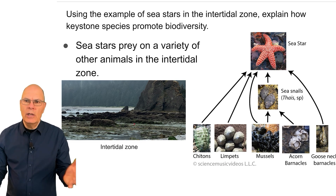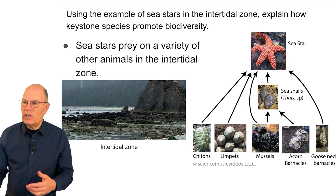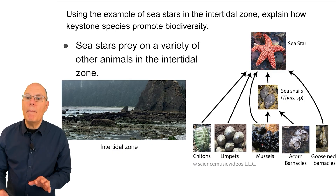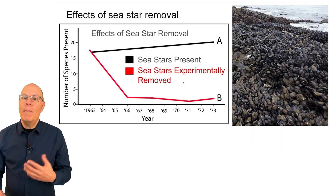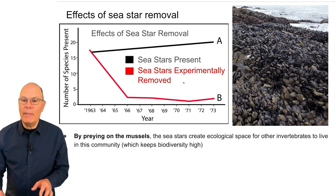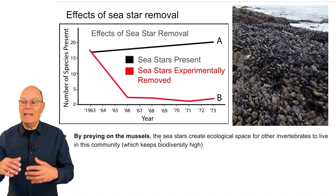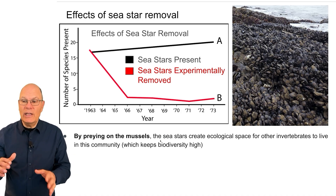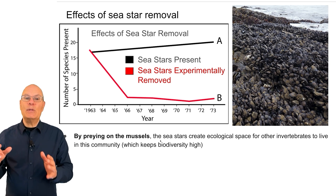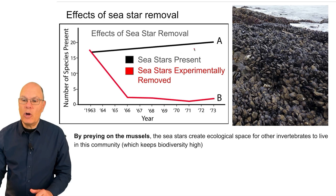Here's the intertidal zone — the zone between the low tide and the high tide — and here are some of the many animals that sea stars prey on, including, importantly, mussels. When sea stars are removed from the intertidal zone, biodiversity can plummet. That's because by preying on the mussels, sea stars create ecological space — physical space — for other invertebrates to live in this community, and that keeps biodiversity high.